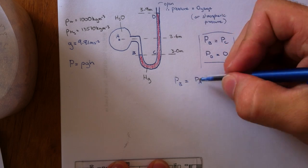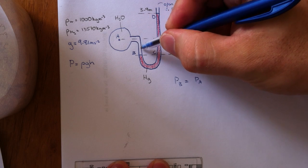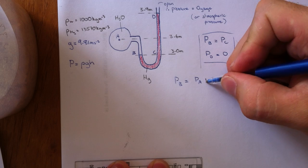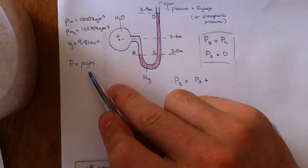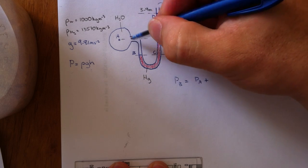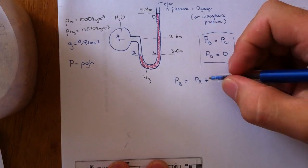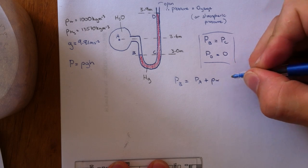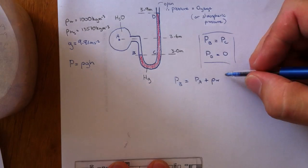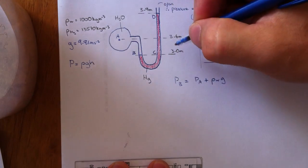So pressure at B equals pressure at A plus, that's plus because we're increasing the pressure, plus density of this liquid here which is water. We'll use W for water.